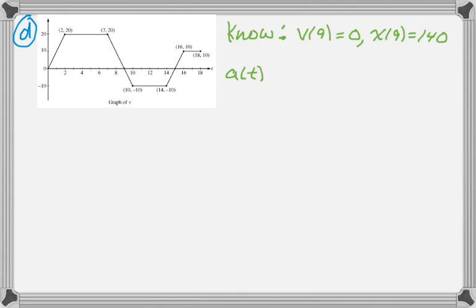So, to find A of T, that's just going to be a difference quotient, because A of T is constant, because V of T is linear. And so, filling in the values, or you can really just count it off of the graph, you know, down 30 and over 3. So, negative 10 for A of T.